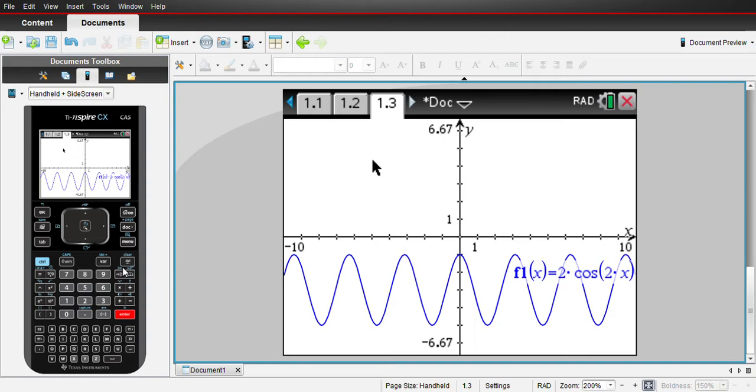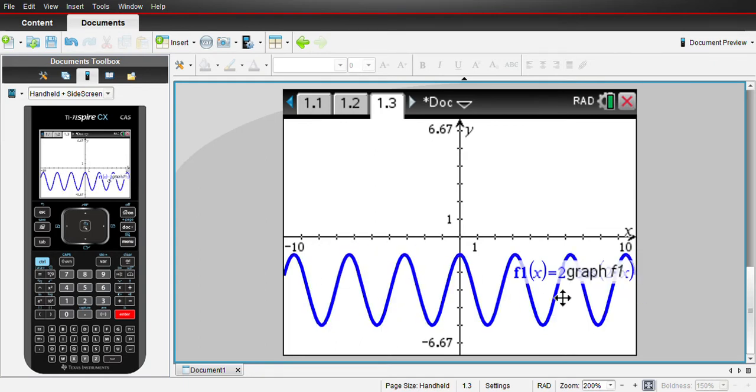For this one here, it hasn't restricted the domain at all. As you can see, it keeps going all the way from all the negative values to positive, and it'll keep going.